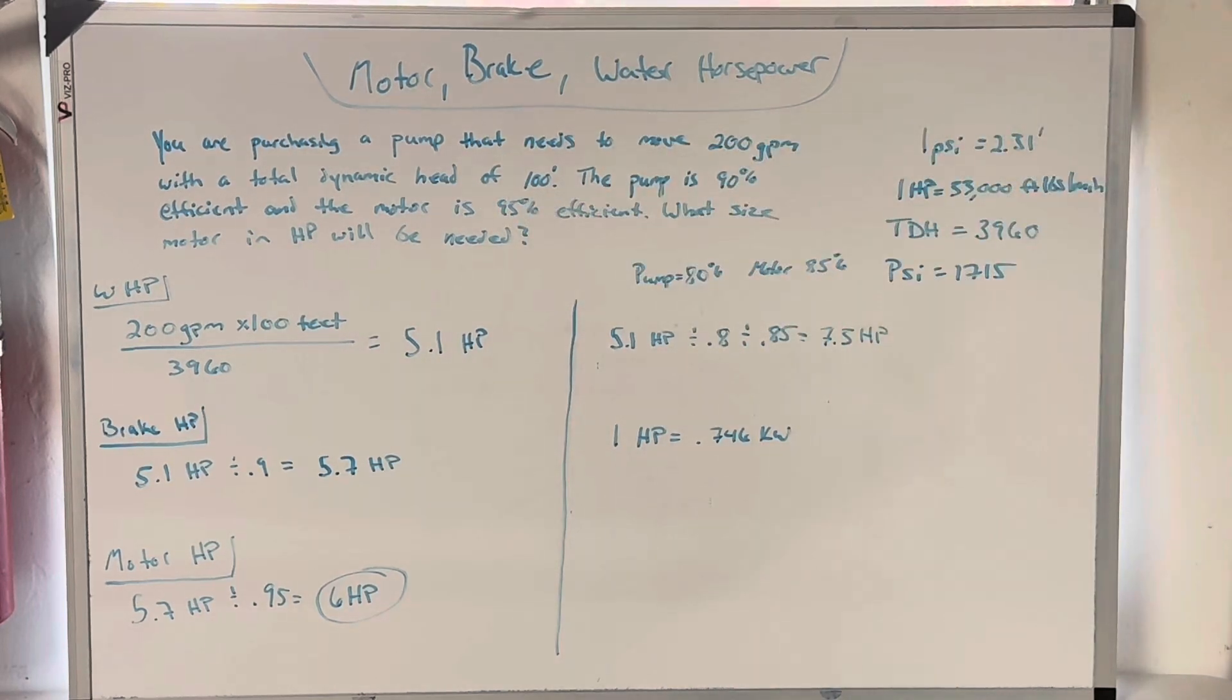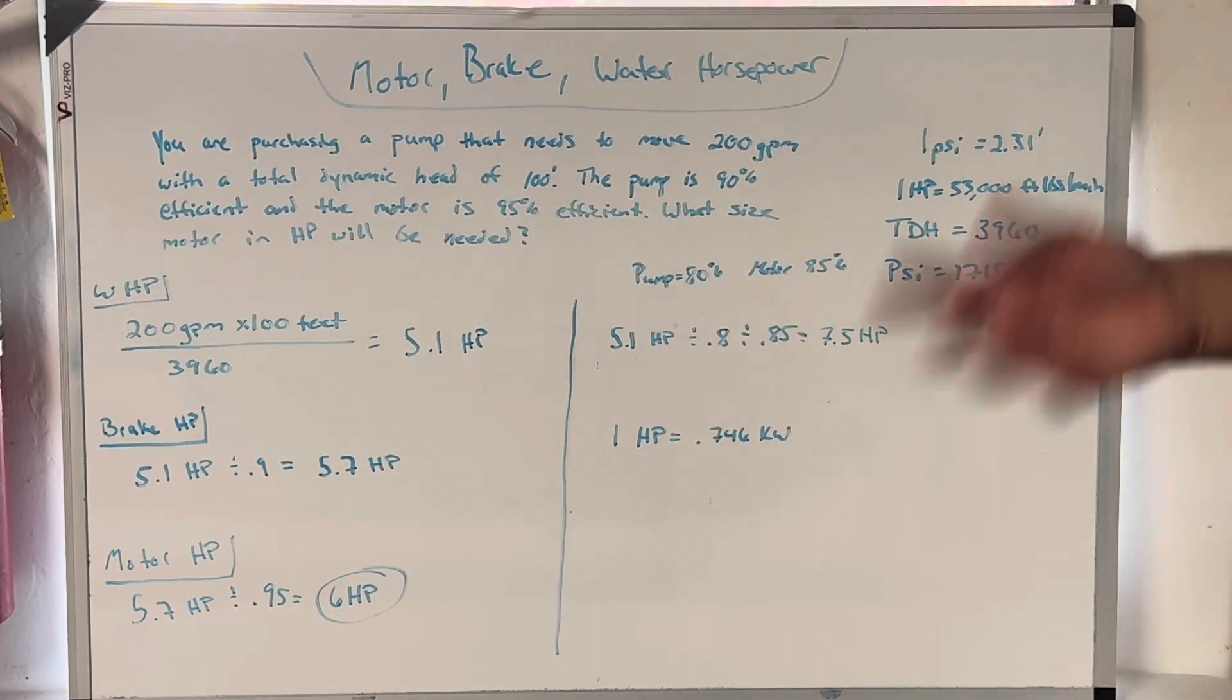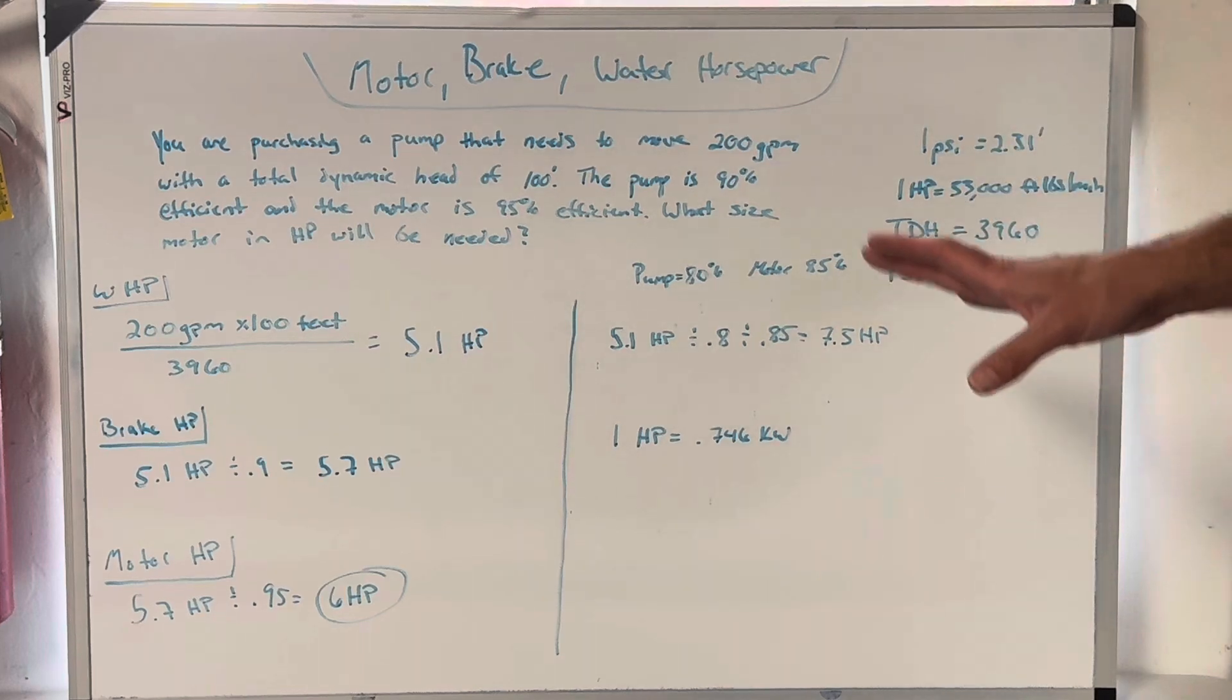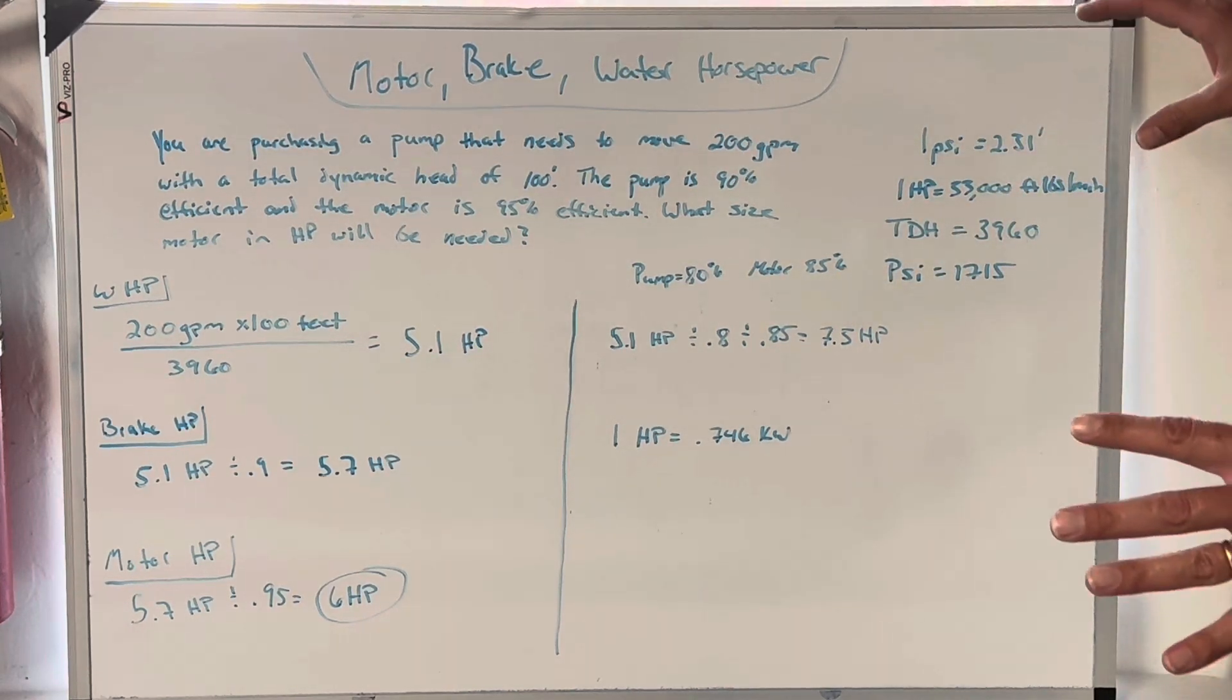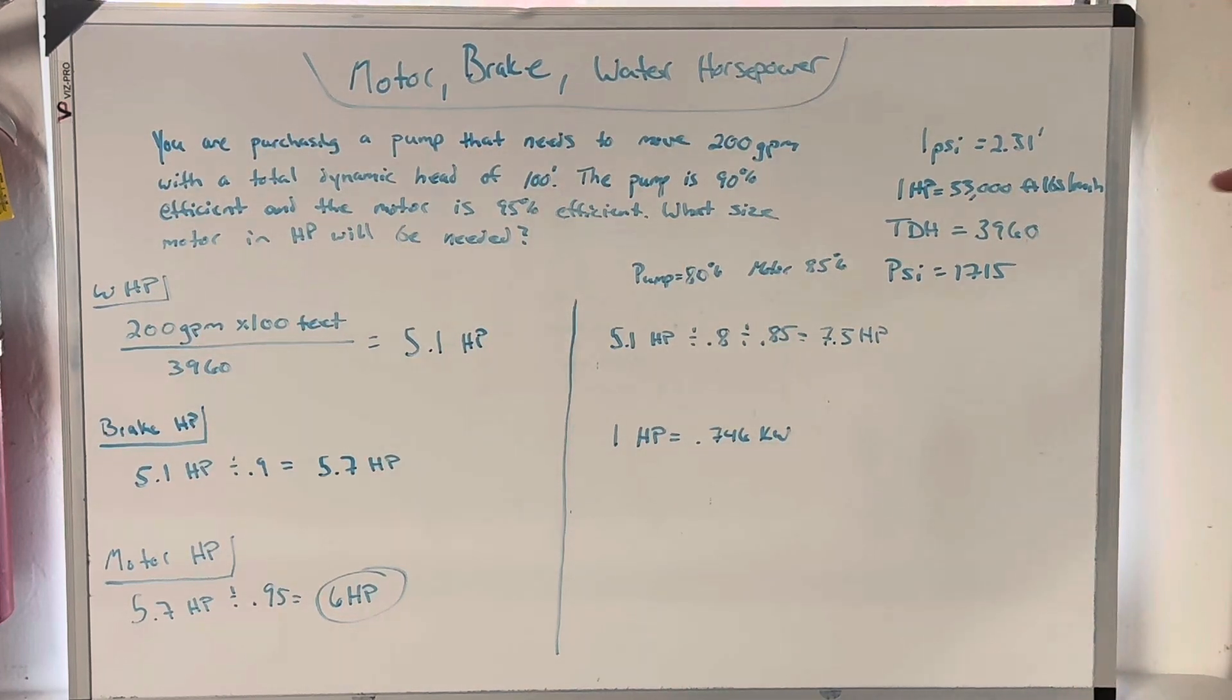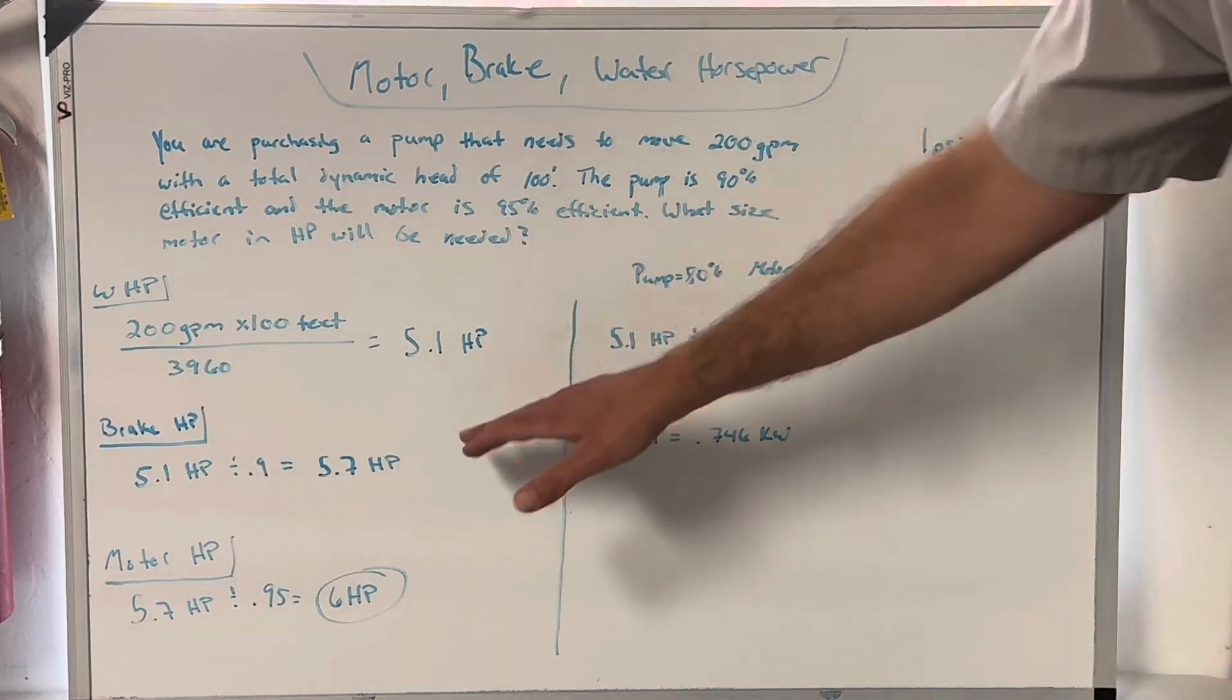And my motor is 95% efficient. It's got to spin. It's got to do stuff. There's friction. We live on a planet with air molecules that cause friction. It happens. So 5.7 horsepower, which is my brake horsepower divided by 0.95 is six horsepower. I need a six horsepower motor for this pump. Now we're not getting to pump curves. We're not getting into all that. This is a very typical math problem on a wastewater and a drinking water distribution exam. You might see this on your treatment for drinking water as well. This is a typical figure out water horsepower, brake horsepower, motor horsepower.